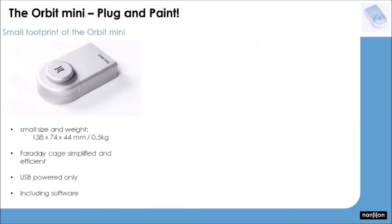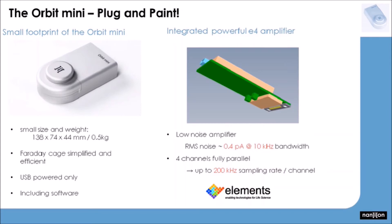The Orbit Mini is extremely small, around the same size as an external hard drive, and is only powered and connected via a USB cable. The E4 amplifier inside the Orbit Mini offers four completely separate recording channels, meaning there is no multiplexing whatsoever involved, and all signals are recorded fully in parallel. The noise level is comparable to the standard amplifiers in the field, and you can record all channels at sampling rates up to 200 kHz.